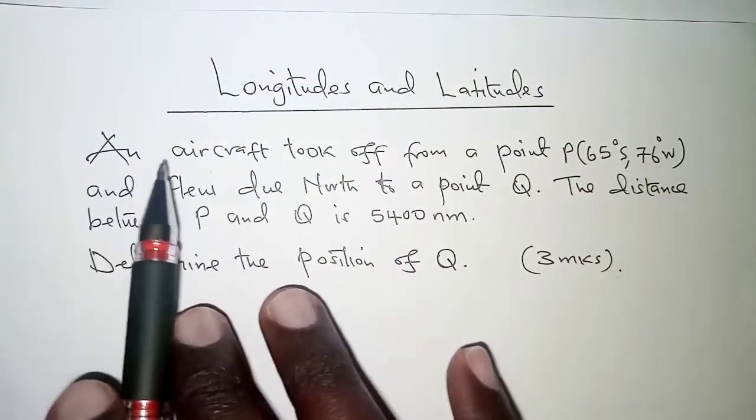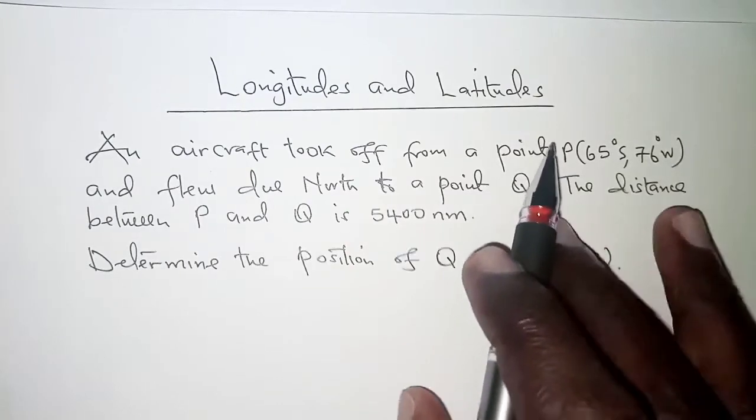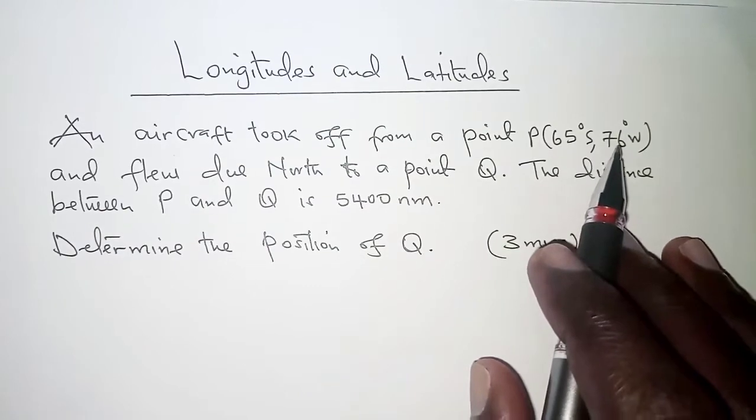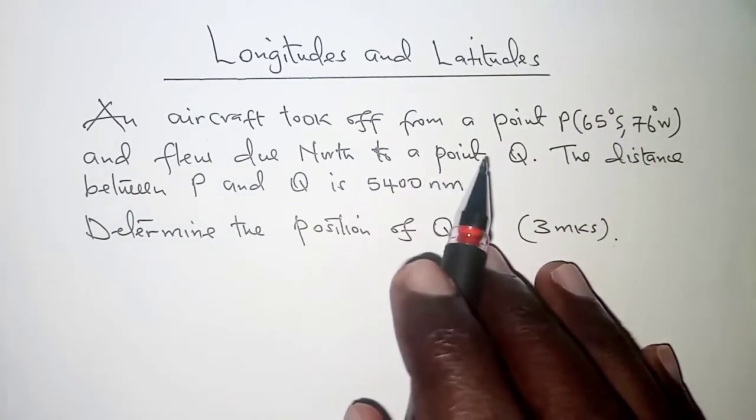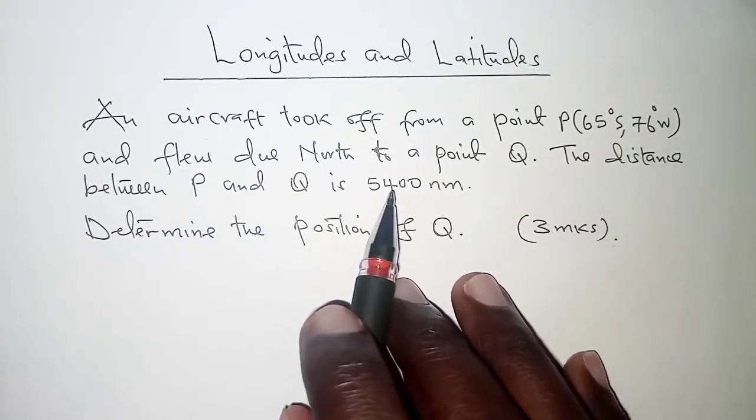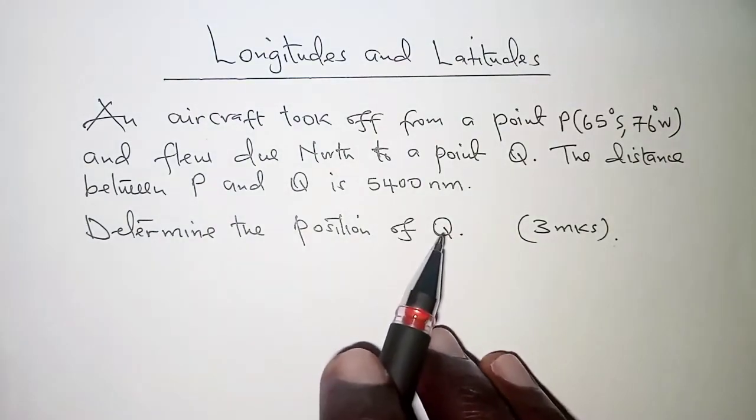The question reads: an aircraft took off from a point P given by the coordinates 65 degrees south, 76 degrees west and flew due north to a point Q. The distance between P and Q is 5400 nautical miles. Determine the position of Q.